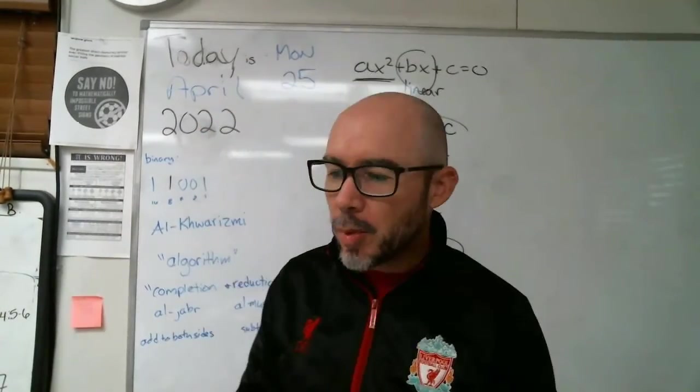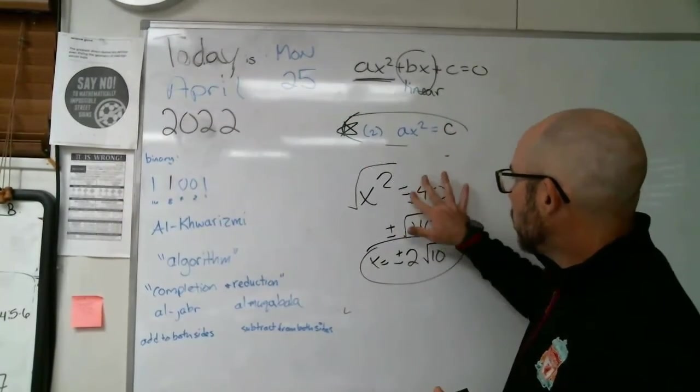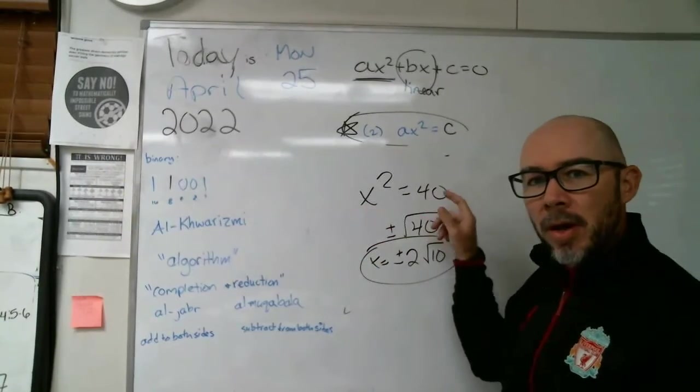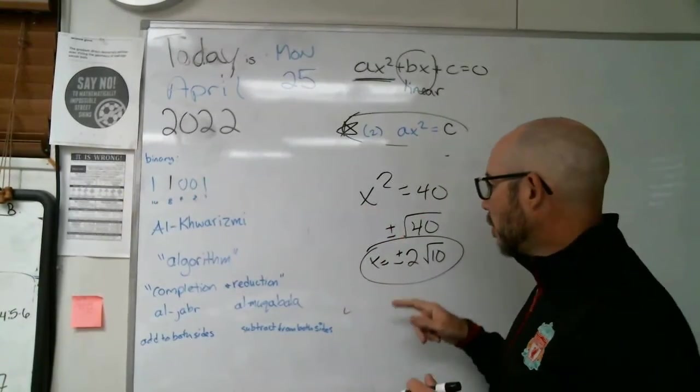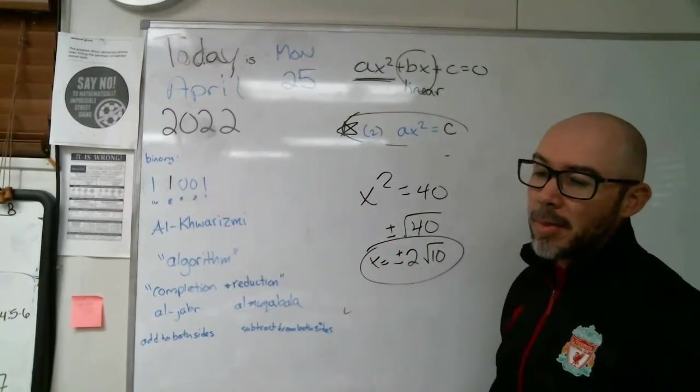That's about it. There's one application question, but it just uses the same thing. Once we get it to this point where there's an x squared on one side and a number on the other, you're going to finish it off by taking the square root of both sides and giving me two solutions, a plus version and a minus version.